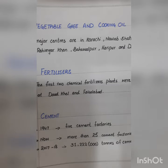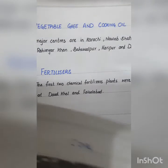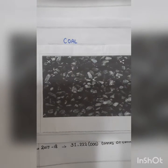The first two chemical fertilizer plants were built at Daudkhel and Faisalabad. Regarding cement factories — in 1947 there were only five cement factories in Pakistan, but now there are more than twenty-five cement factories working in Pakistan.